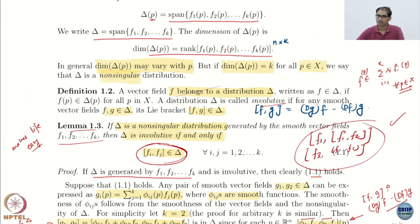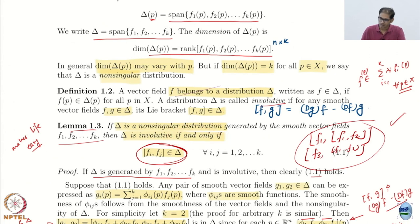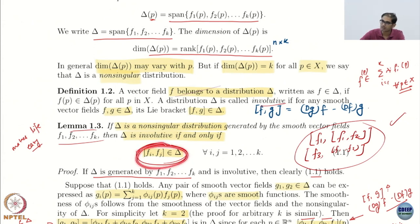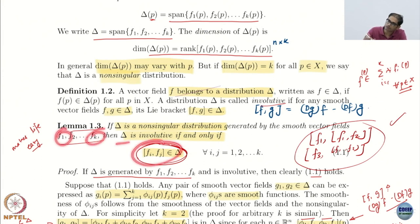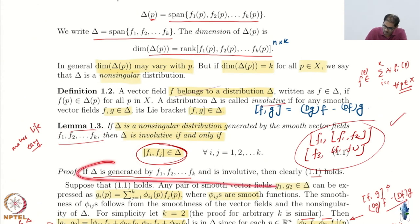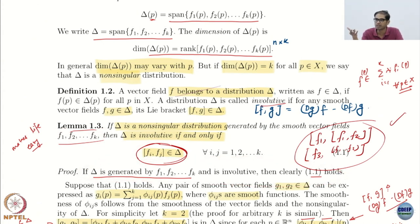Proof: whenever we do something we have to prove it, and it is an if and only if, so you have to prove both sides. First, suppose you have involutivity — if you have involutivity then this is obvious. Because involutivity means that if f1 to fk belong to delta, then the Lie brackets have to be in delta. So this is obvious.